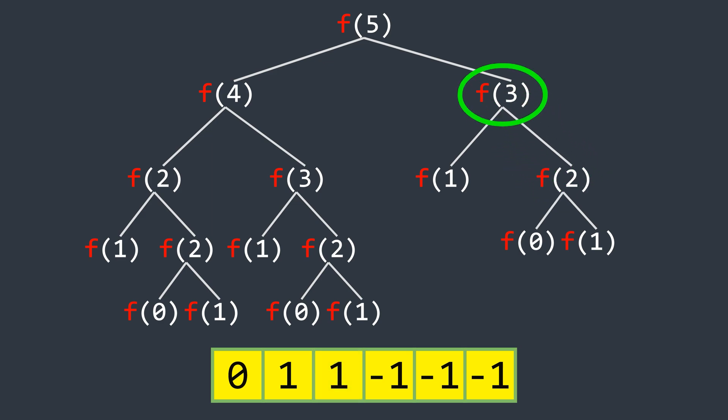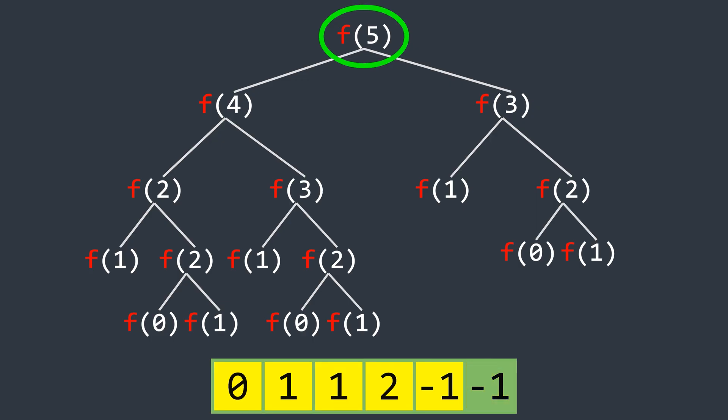And similarly, we compute f of 3 by adding f of 2 and f of 1, which is 2 here, so we update index 3. Now we move to f of 5, it turns out we still need f of 4.